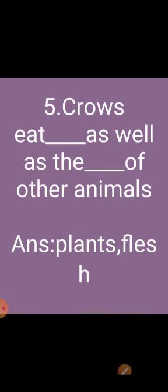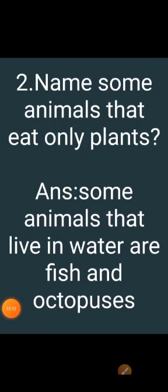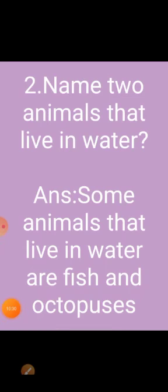Answer the following questions. First: are birds and insects animals? Yes, birds and insects are animals. Second: name two animals that live in water — fish and octopus. Third: what helps birds fly? Wings, feathers, and a tail help birds to fly.